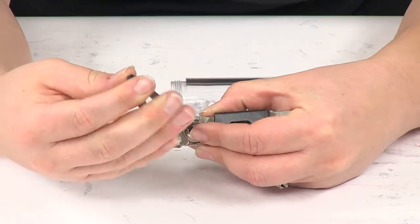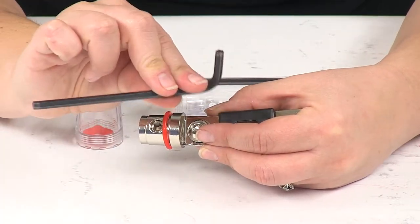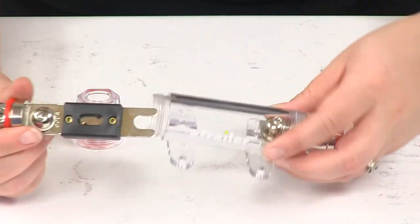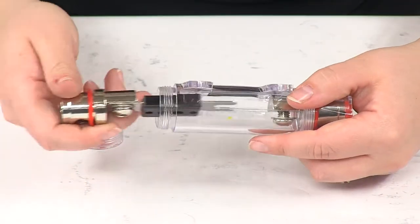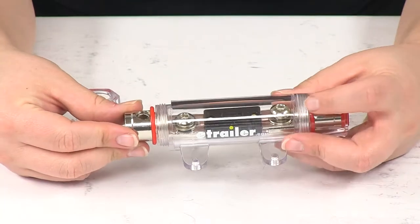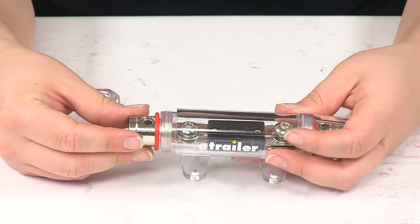Tighten it down using a 5 millimeter hex key. Now the hex key is not included with this so you will have to pick one up on your own. The other end just needs to slide in and underneath that other bolt there. Then you tighten that one down to make sure that it's secure.